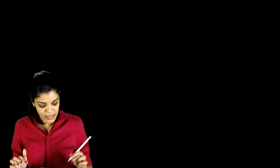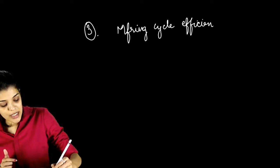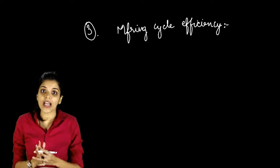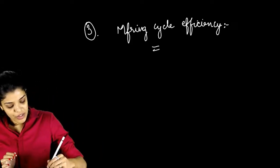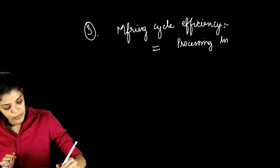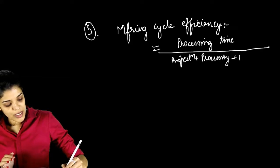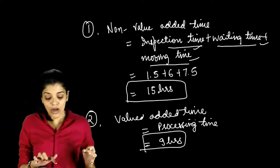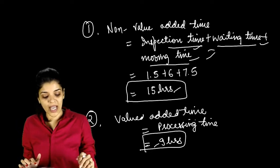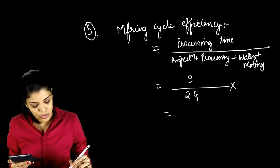Third, manufacturing cycle efficiency equals processing time divided by total time (processing plus inspection plus waiting plus moving time). That is 9 divided by 24, multiplied by 100, giving a manufacturing cycle efficiency of 37.5%.